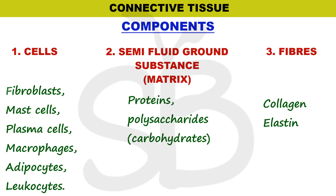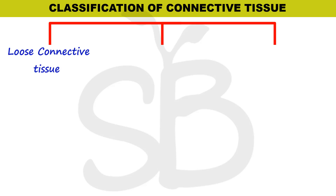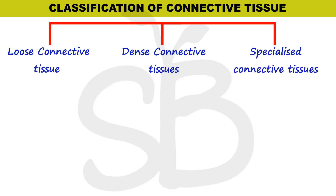Now we will start the classification of connective tissues. They are classified into three types: loose connective tissue, dense connective tissue, and specialized connective tissue.